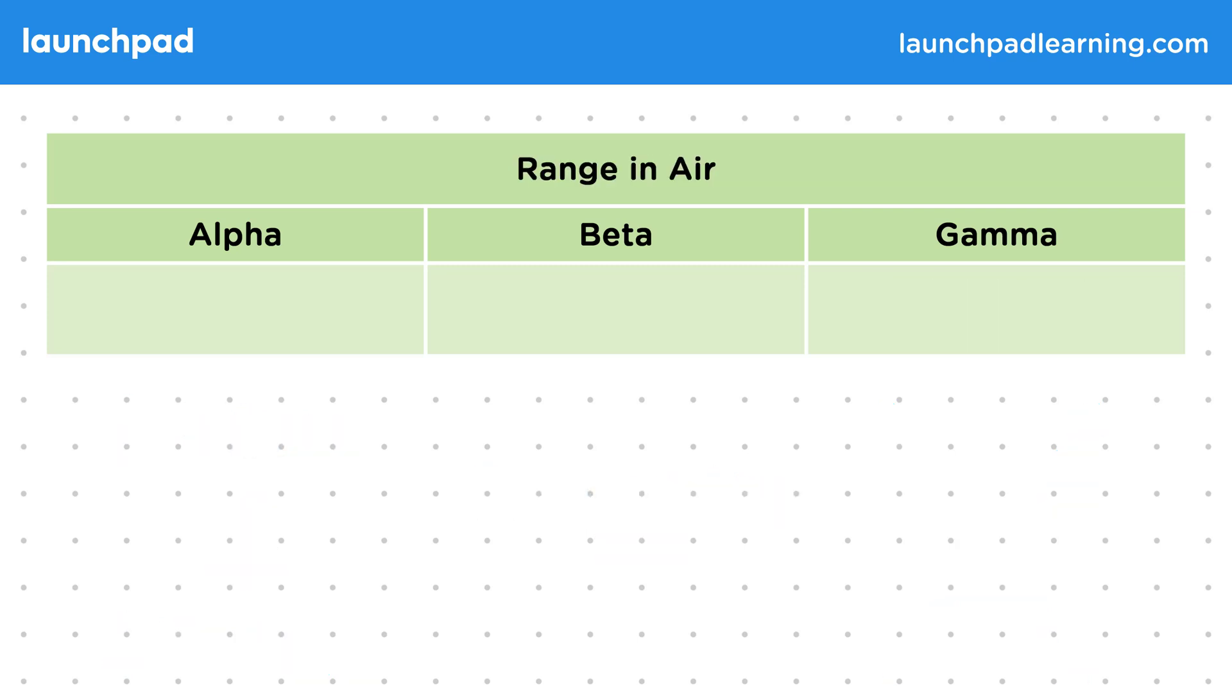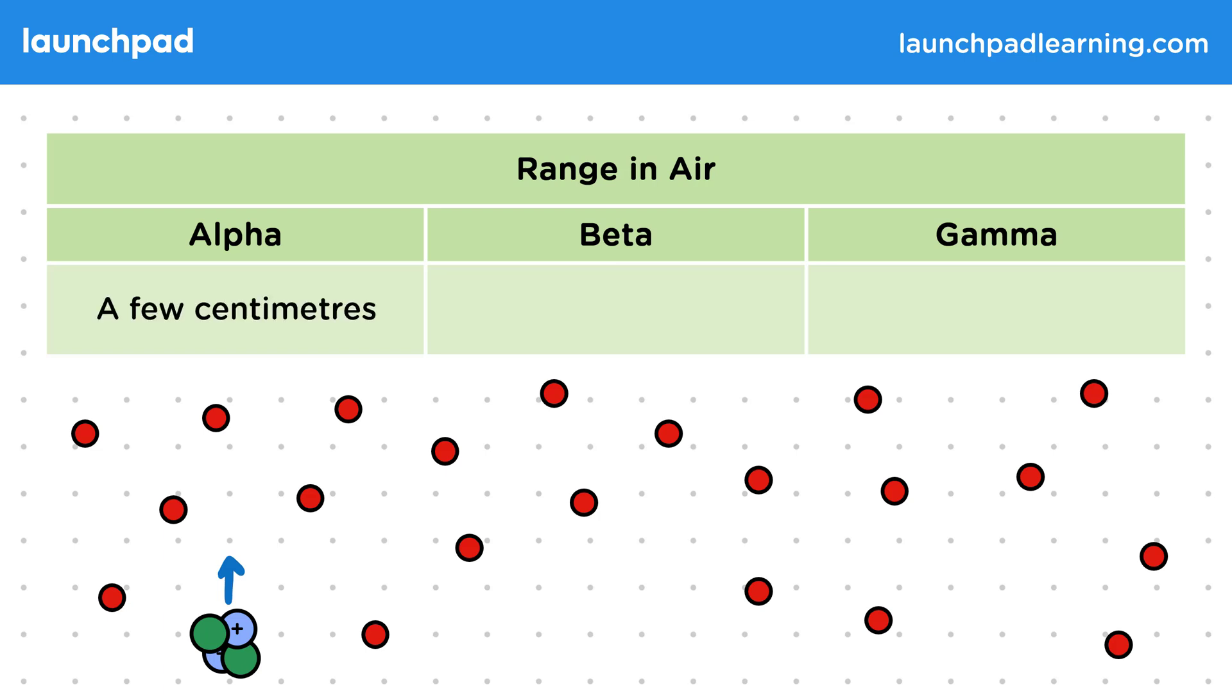The range in air is a measure of how far radiation can travel naturally. Alpha radiation can't travel far, only a few centimetres as it interacts with air too much.